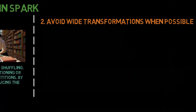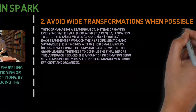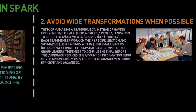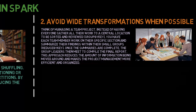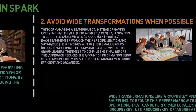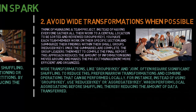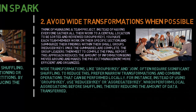Second, avoid wide transformations when possible. Think of managing a team project — instead of having everyone gather all their work to a central location to be sorted and reviewed (group by key), you have each team member work on their specific section and summarize their findings within small groups (reduce by key). Once the summaries are complete, the group leaders meet to compile the final report. Wide transformations like group by key and join often require significant shuffling. To reduce this, prefer narrow transformations and combine operations that can be performed locally. For instance, instead of using group by key, use reduce by key or aggregate by key, which perform local aggregations before shuffling, thereby reducing the amount of data transferred.